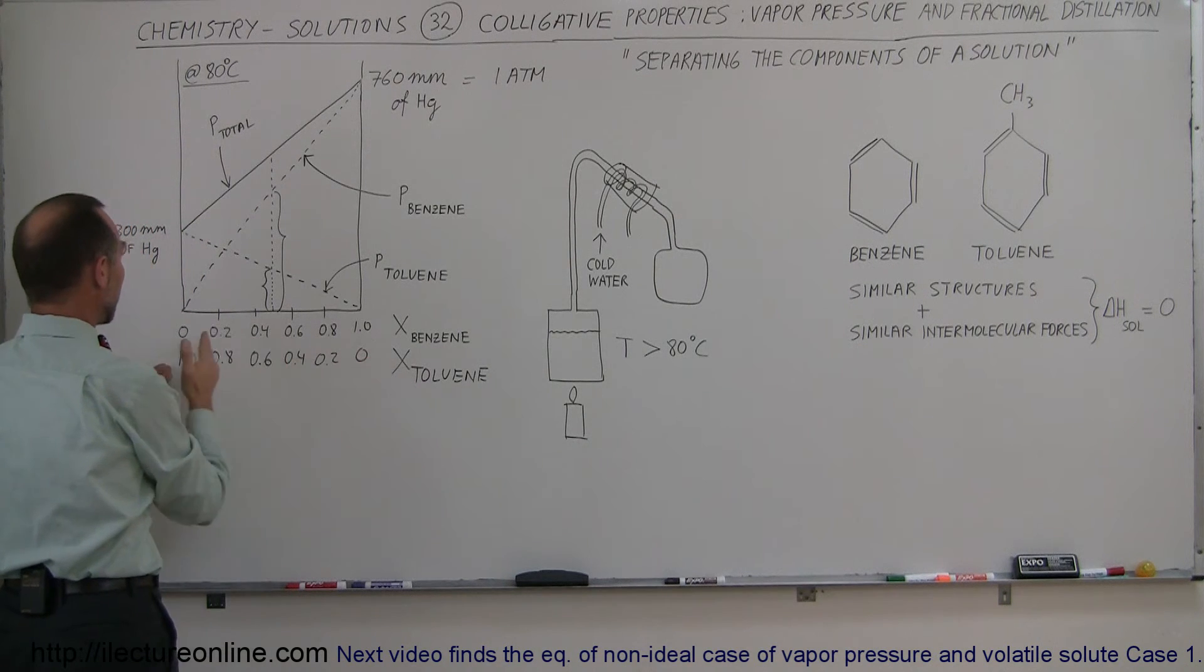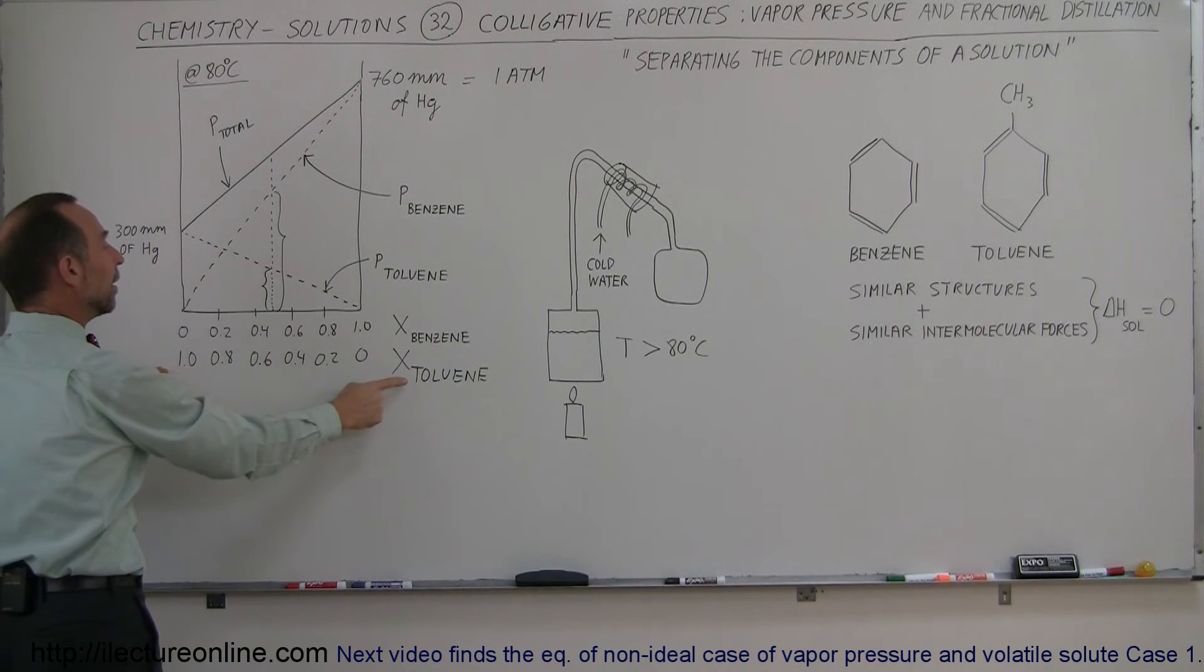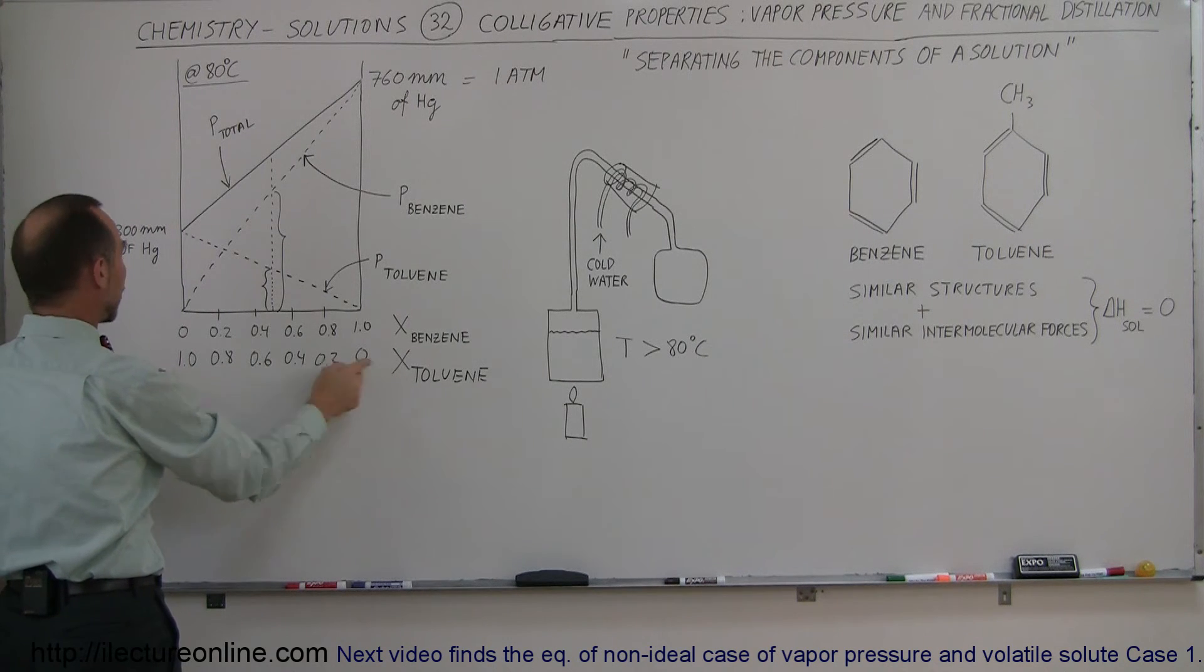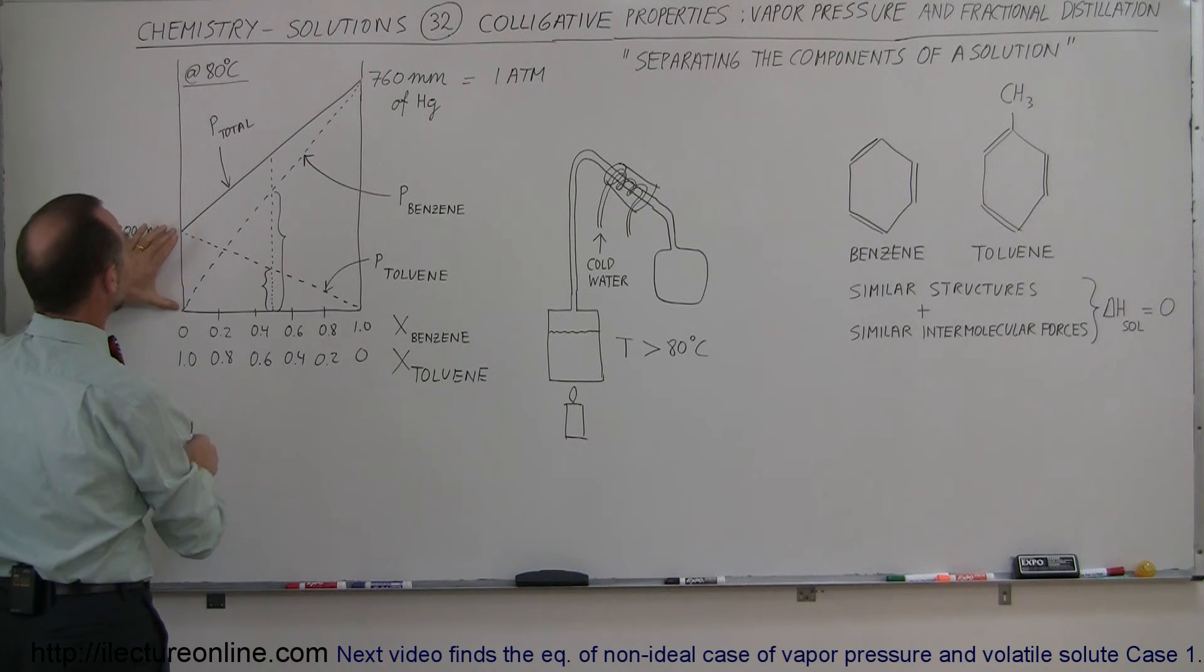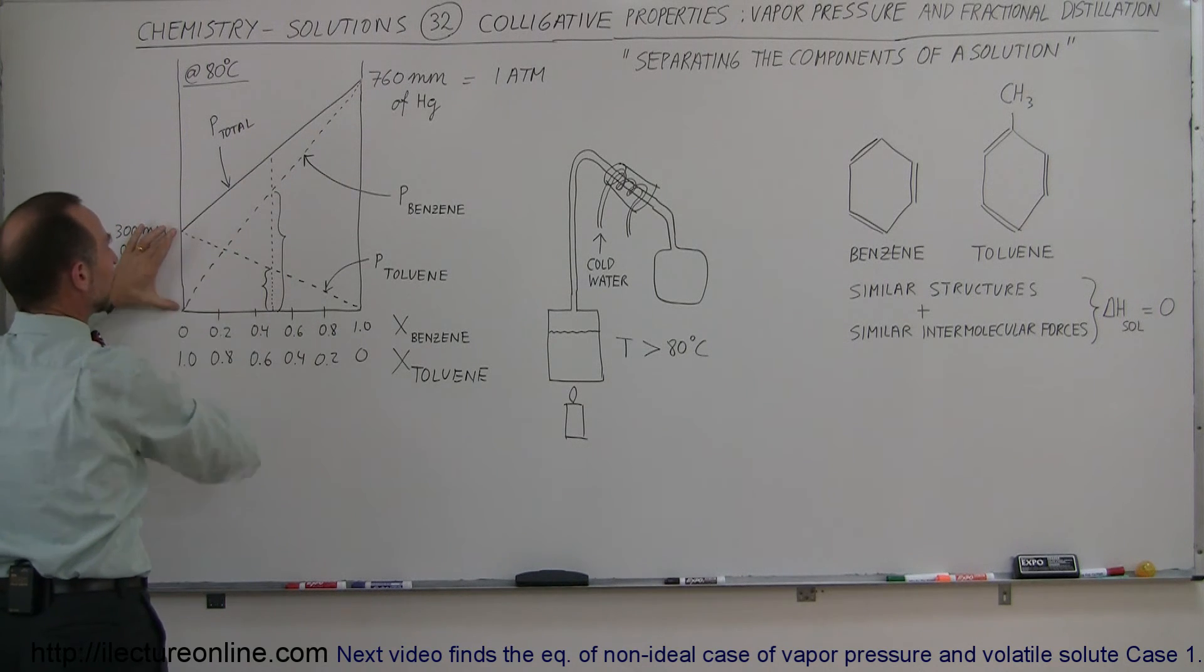If the entire solution is made up of toluene, so that the fractional component of toluene is 100% or 1.0, then the entire vapor pressure of the solution is due to the vapor pressure of the toluene.